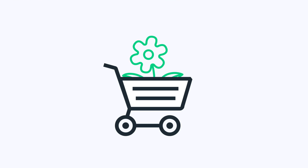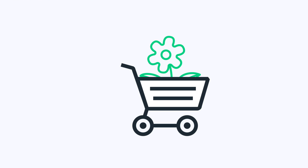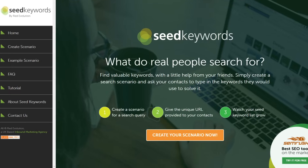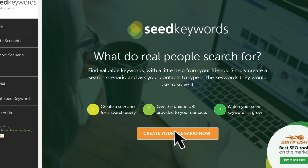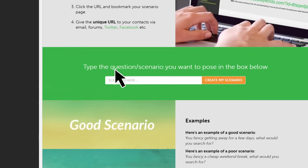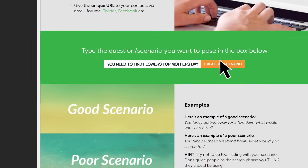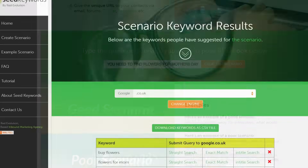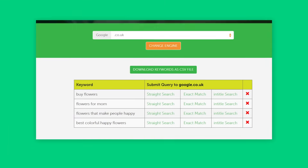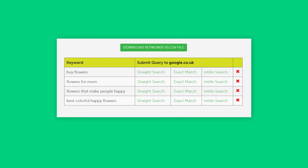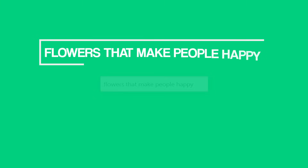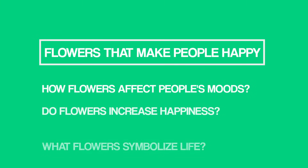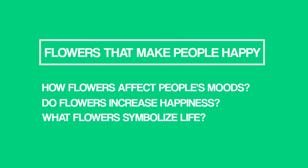Instead of pulling seed keywords out of thin air, you actually ask customers how they'd find you online. Then you use those seed keywords in a traditional keyword research tool. For example, let's say that you run an online flower delivery e-commerce site. You'd use SeedKeywords to create what's called a scenario — basically, you ask people how they would search for what you sell. Then send that scenario to people, and you'll be surprised at the responses. Put the terms you find into your favorite keyword tool and you'll find untapped keywords your competitors don't know about yet.